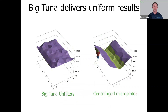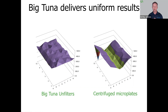The results speak for themselves. What you see here is the amount of recovery across various wells on the left in a BigTuna Unfilter compared on the right to a centrifuge filter plate. All that purple on the BigTuna Unfilter shows that because of individual volume measuring, uniform pressure, and gentle mixing, we get uniform recovery across all of the wells — as opposed to centrifuging a filter plate, where you typically get uneven force in the middle of the plate that processes samples at a faster rate, giving you inconsistent results. Not so with BigTuna.